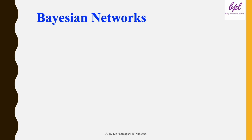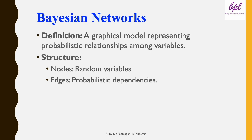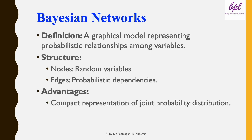Bayesian networks. To organize and compute probabilities efficiently, we use Bayesian networks. A Bayesian network is a graphical model where nodes represent random variables like symptoms or diseases, and edges represent dependencies between variables. One big advantage of Bayesian networks is that they are compact — instead of storing every possible combination of variables, we only store relationships between directly connected variables, making them efficient for large-scale problems.